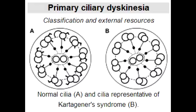What are the classic clinical presentations seen with Kartegener's Syndrome? The classic clinical presentation includes situs inversus, chronic sinusitis, bronchiectasis, and infertility.